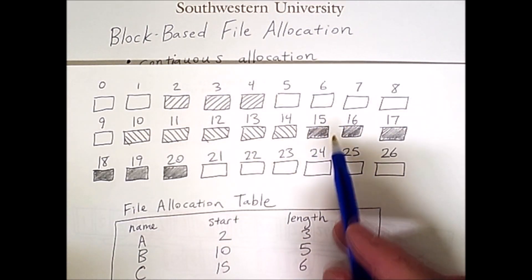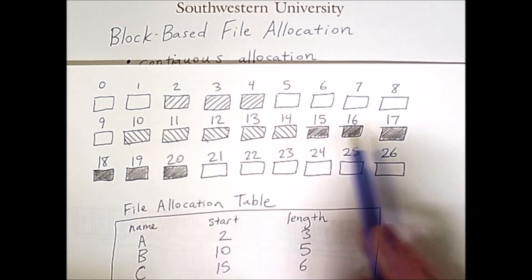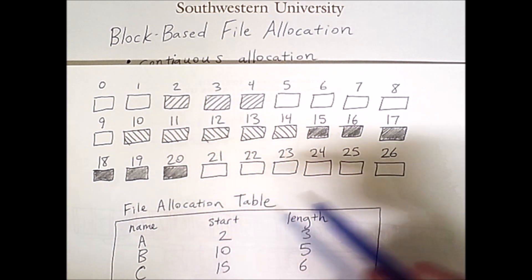Keep in mind that the 2D layout of these blocks is irrelevant and so we simply have a linear sequence going 15, 16, 17, 18, 19, 20 for the blocks of that last file.